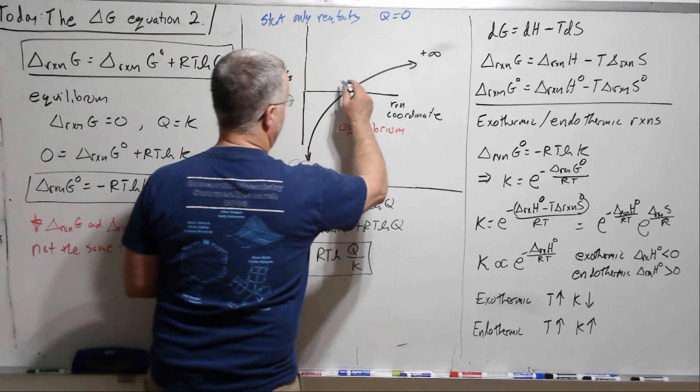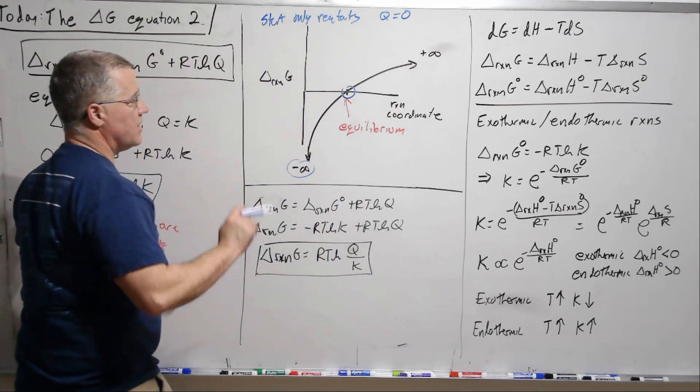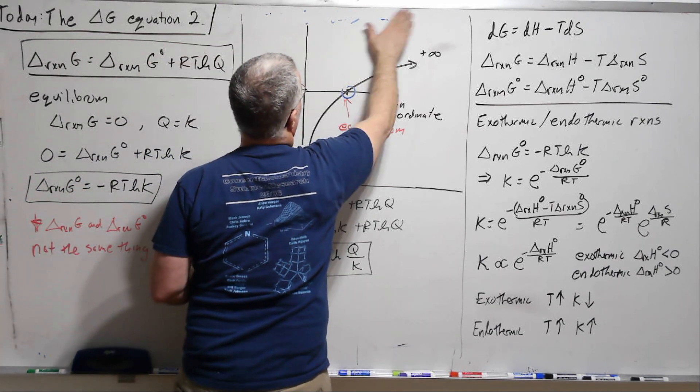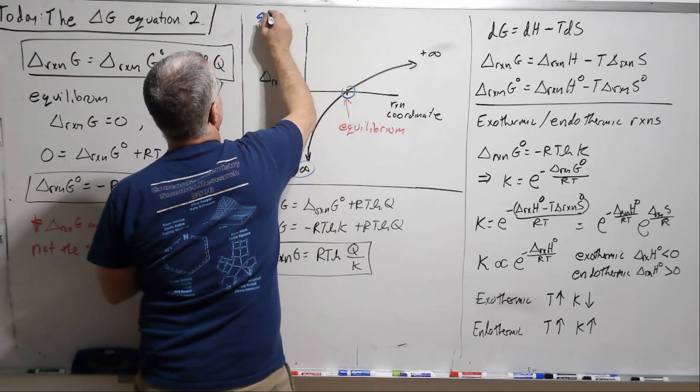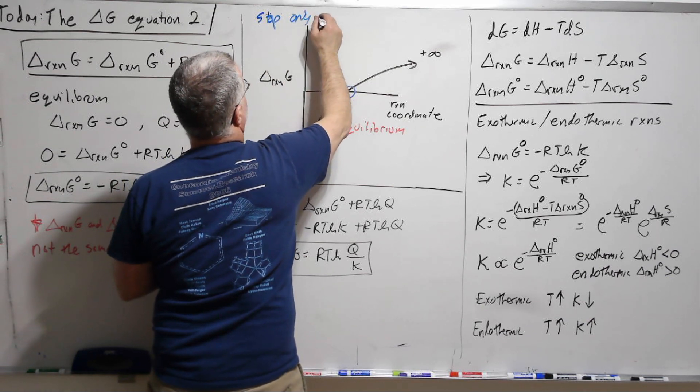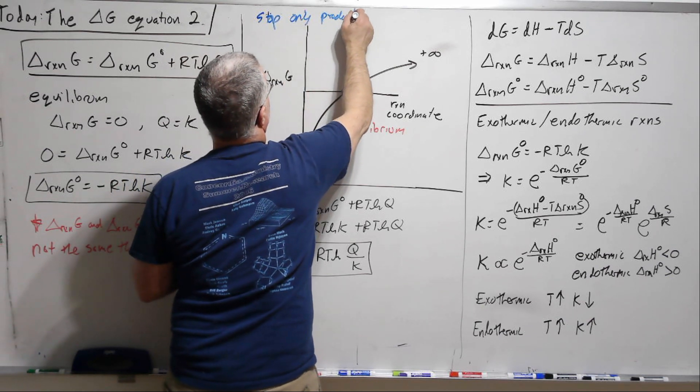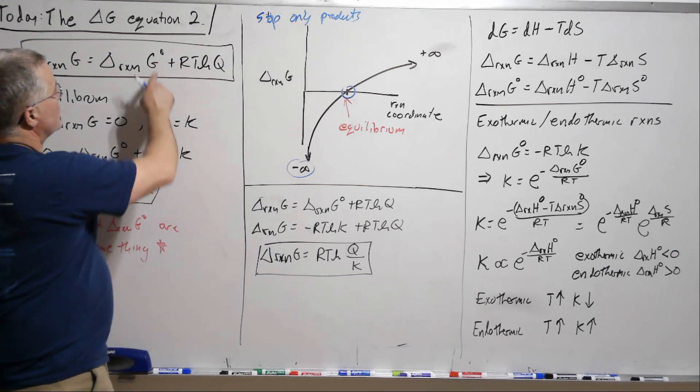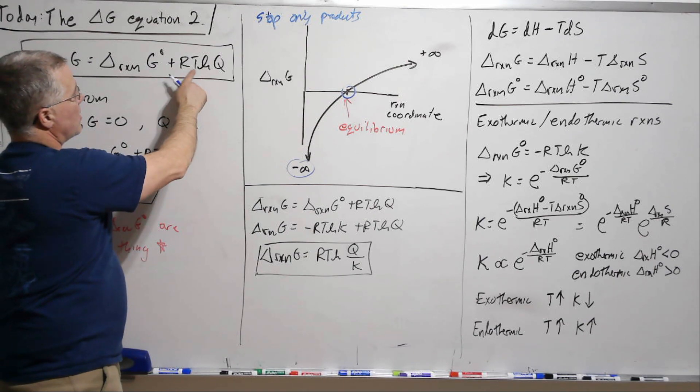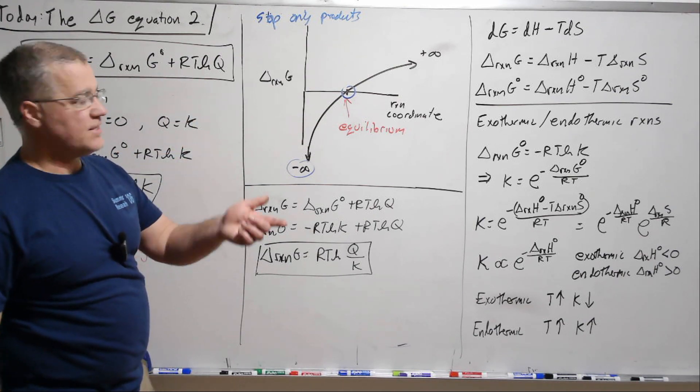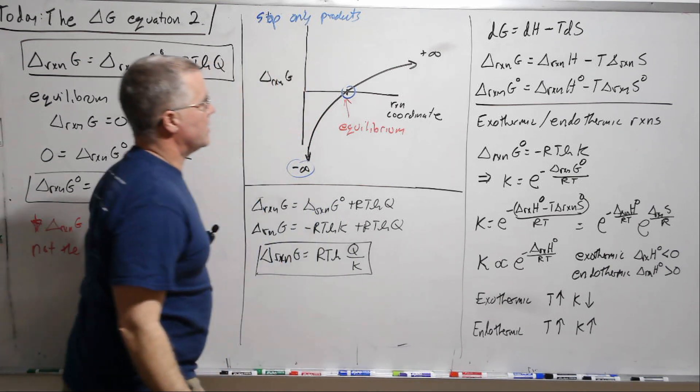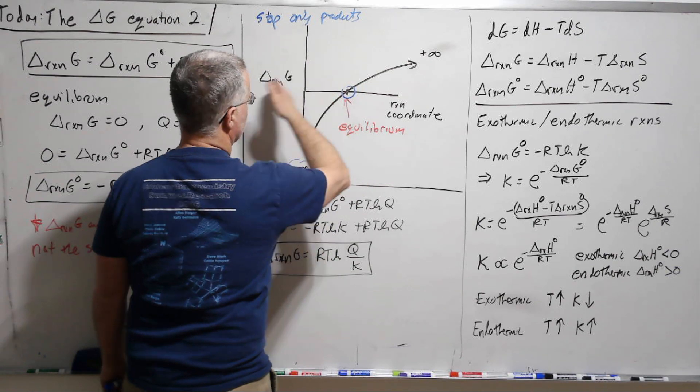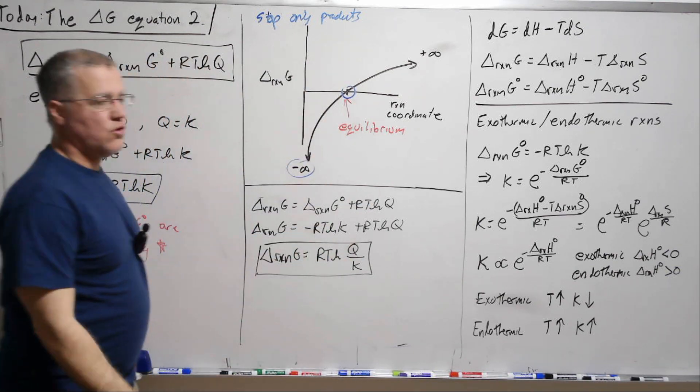Then, if we progress past the equilibrium, and let's take it all the way so we have only products. Our reactants are zero, that means Q is infinity. So it doesn't matter again what this is, this is RT log of infinity, that's infinity. Now it's a soft infinity, because it's going as log, but it's infinity nonetheless. And so this captures the behavior of Delta G which varies through the whole reaction.